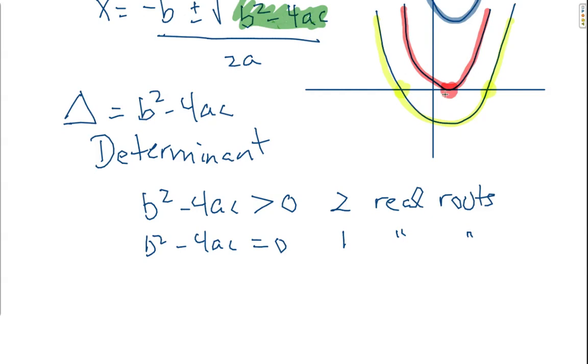And then we also have b squared minus 4ac is less than zero, means there are two non-real roots, or imaginary roots. And we're going to be talking about imaginary roots in this course in the near future.